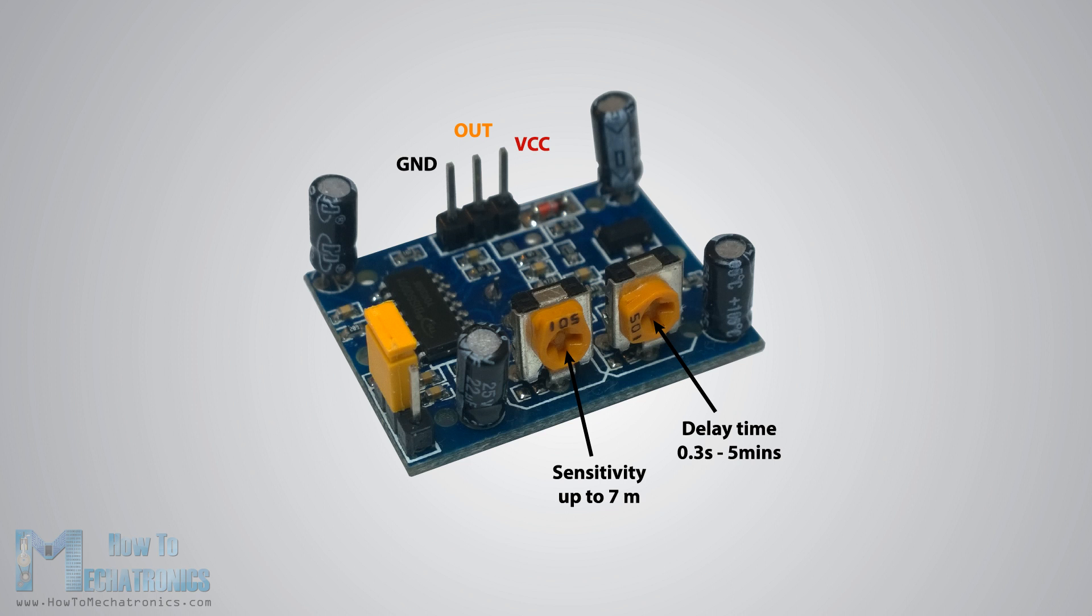The module has three more pins with a jumper between two of them. These pins are for selecting the trigger modes. The first one is called non-repeatable trigger and works like this. When the sensor output is high and the delay time is over, the output will automatically change from high to low level. The other mode called repeatable trigger will keep the output high all the time until the detected object is present in the sensor's range.